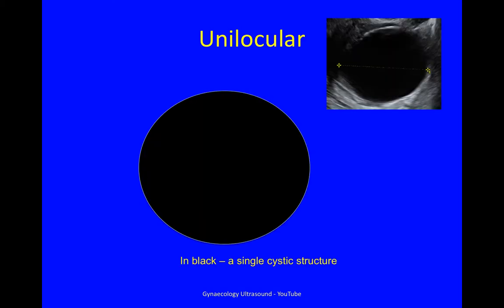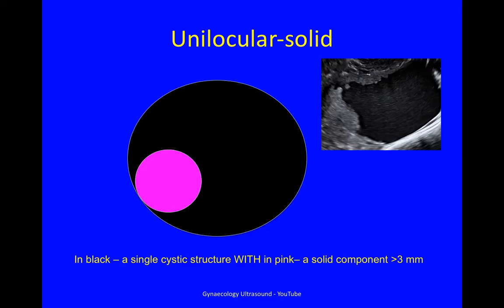This is a unilocular cyst — it is a single cystic structure. This is a unilocular solid cyst: it's a single cystic structure with, shown in pink here, a solid component. That solid component is the same as shown here — it is unilocular solid.